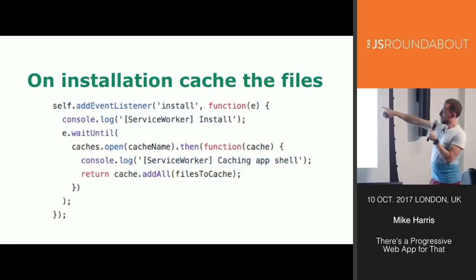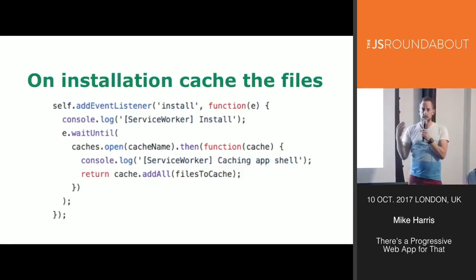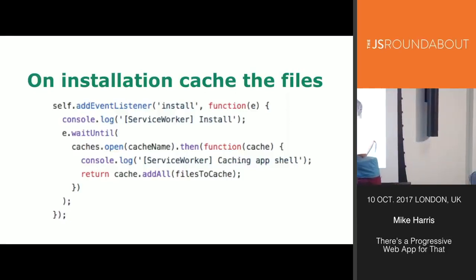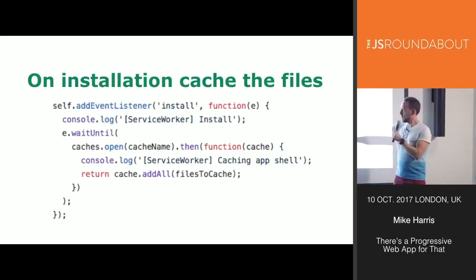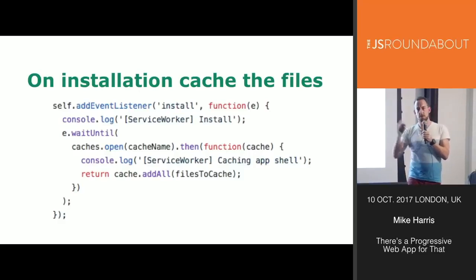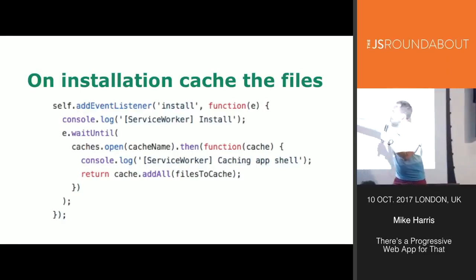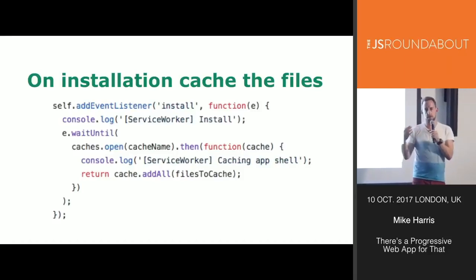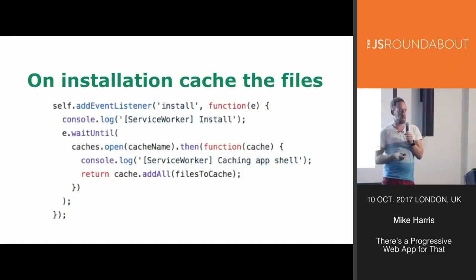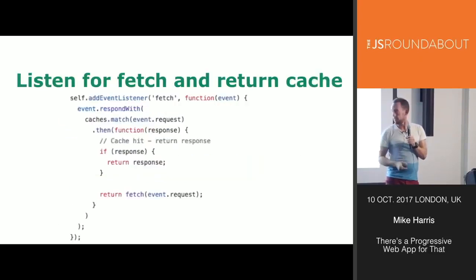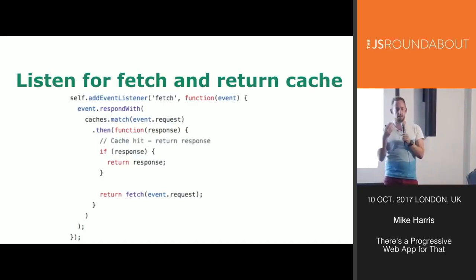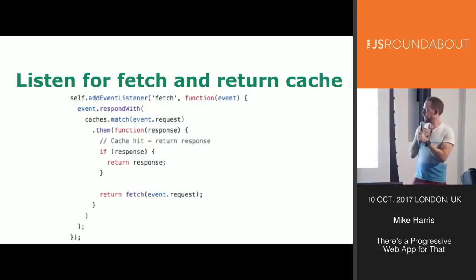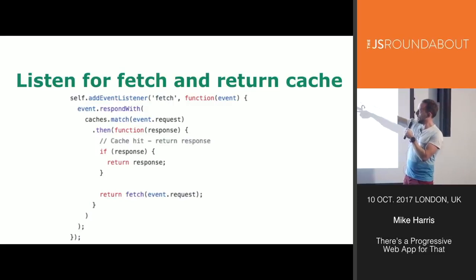In the service worker there's an event listener for the install event, and I want to run some logic when it starts installing. The key line is cache.addAll() to add all the files to the cache - that full list of files. The service worker goes through that whole loop, fetches content from the network for every single one of those routes, and adds them to the cache. Using promises, you've got a waitUntil() - wait until all those files are added into the cache, then the service worker is installed and ready to go.